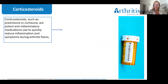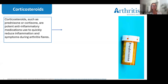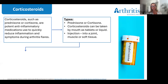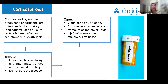The next medication is corticosteroids — the most common being prednisone or cortisone. These are potent anti-inflammatory medications used to quickly reduce inflammation and symptoms during arthritis flares. They're often used to treat inflammatory forms of arthritis but can also be used to treat a single inflamed joint. They can be taken by mouth as tablets or liquid, or given by injection into a joint, muscle or soft tissue. These medicines have a strong anti-inflammatory effect and can reduce pain and swelling; however, it's very important to know they don't cure the disease.